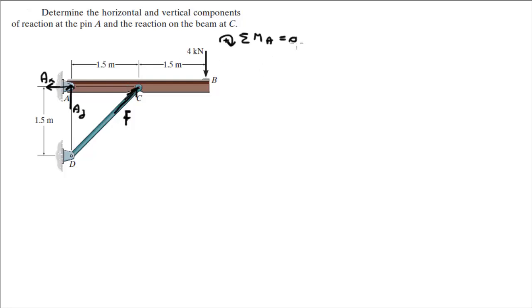So, sum of the moments at A is equal to 0 and are equal to the moment B created by this force. Now, this force has two components. An F_Y component going straight up and an F_X component. Let's call this F_Y. Let's call this F_X.